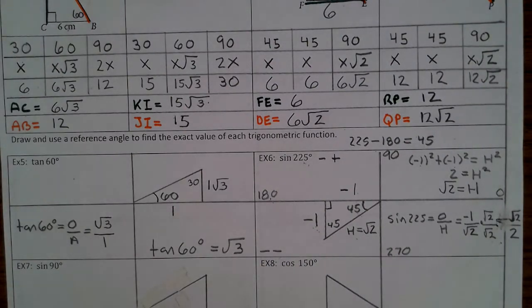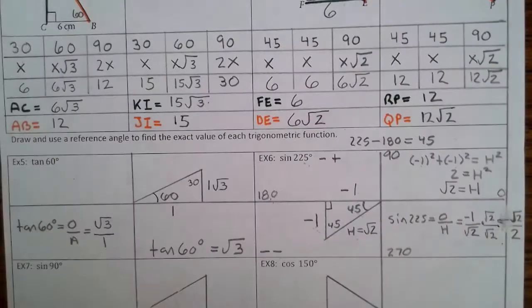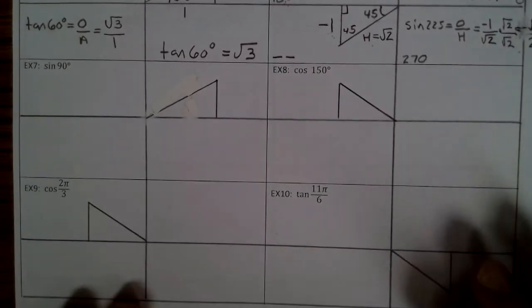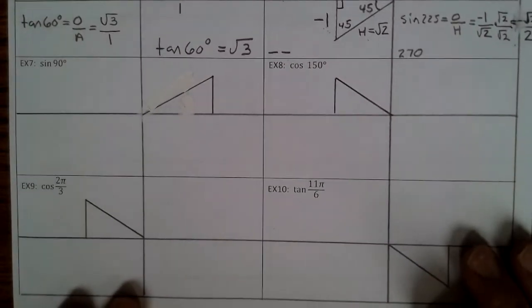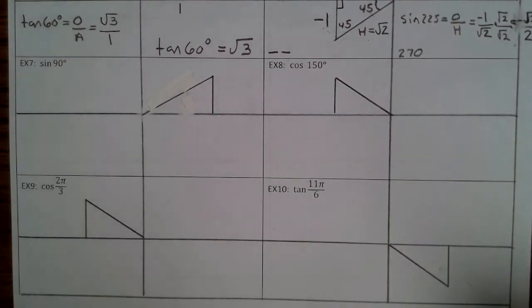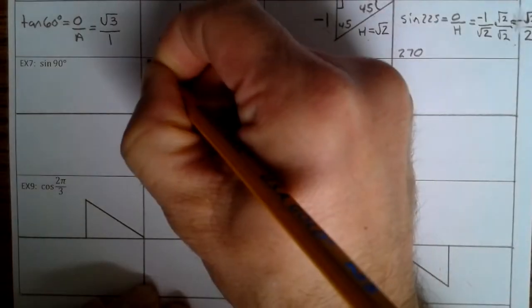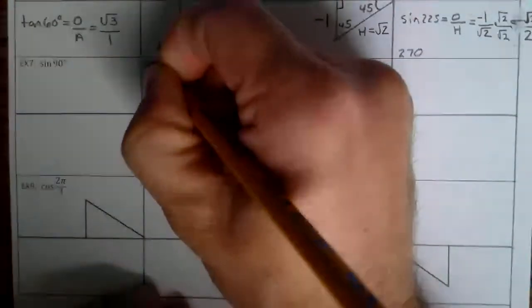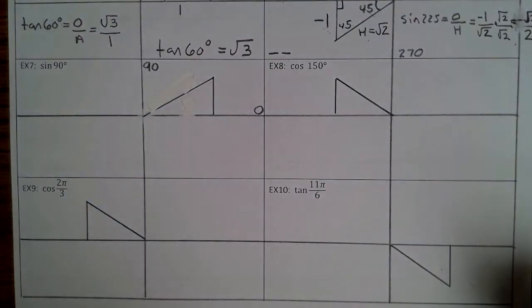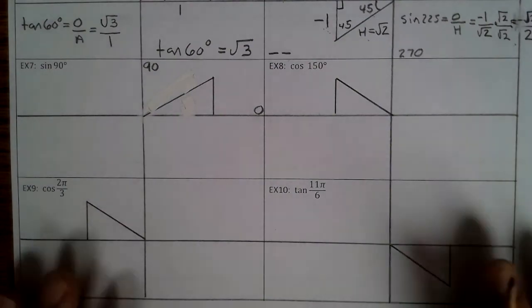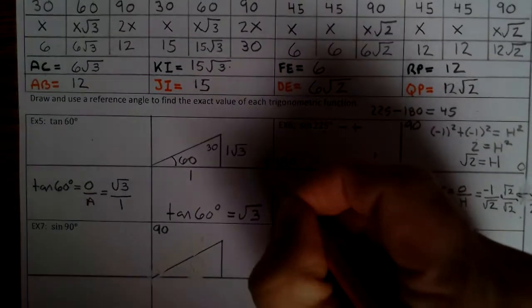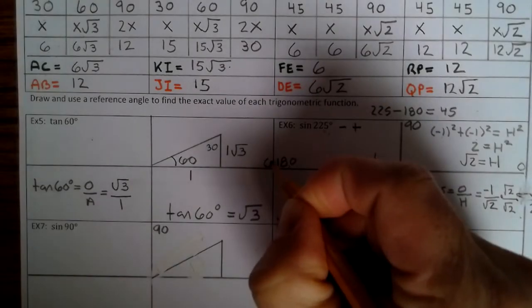Let's take a look at example 7: sine of 90 degrees. We know that 90 is right here. Technically, we don't have a triangle — we just have a vertical line. So we're going to make a triangle come out here and draw a dashed line, pulling this triangle out so we can use trig.